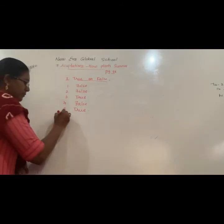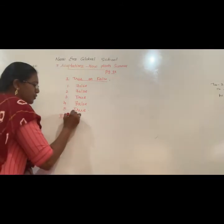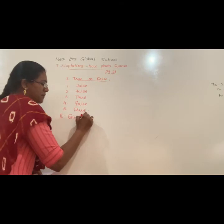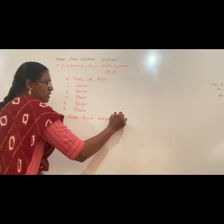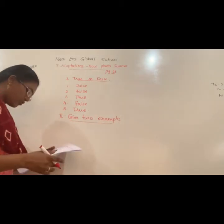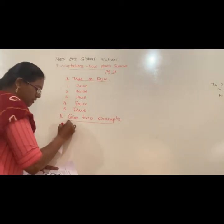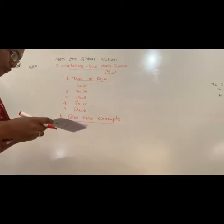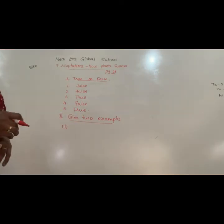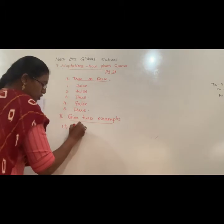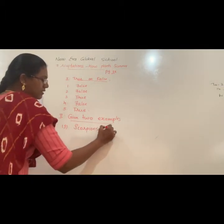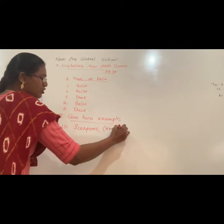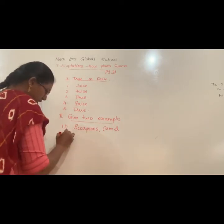Come to the second section: give two examples for the following. You have to give two examples. First one: give two examples for desert animals — not desert plants, animals. So scorpions and camel; these are the two examples.